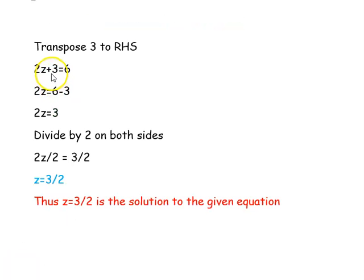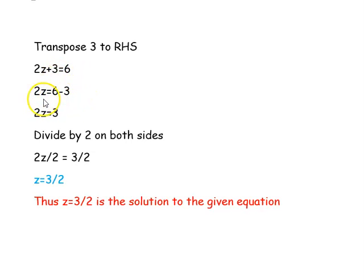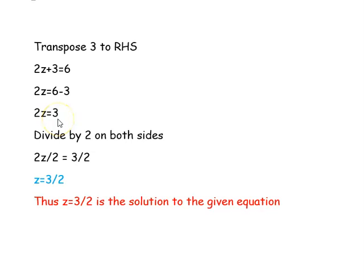Now we are going to transpose plus 3 from the left hand side to the right hand side of our equation. It will become minus 3. So, 2z equal to 6 minus 3. 6 minus 3 is 3, so 2z equal to 3.